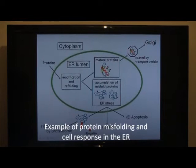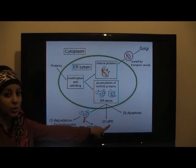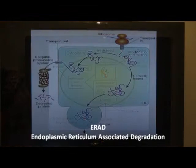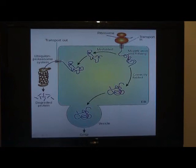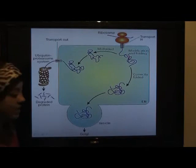Here are some examples of mechanisms to manage unfolded or misfolded proteins. The first is degradation by proteasome. The second is UPR, or the unfolded protein response. The third is apoptosis, or programmed cell death. ERAD, or endoplasmic reticulum associated degradation, is when misfolded proteins are removed from the endoplasmic reticulum into the cytoplasm, where they are degraded by the ubiquitin proteasome system.